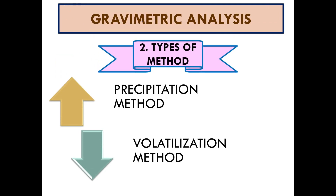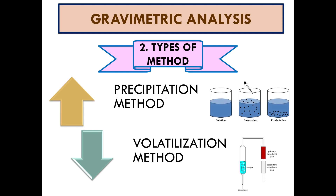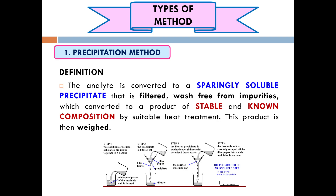The types of methods for gravimetry analysis: there are two types, which are the precipitation method and the volatilization method. In this chapter I will explain the precipitation method in detail, and for the volatilization method I will explain it in general only — we are not going deeply into the volatilization method. The gravimetry analysis focus of this chapter is the precipitation method.